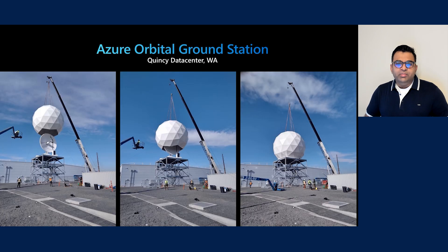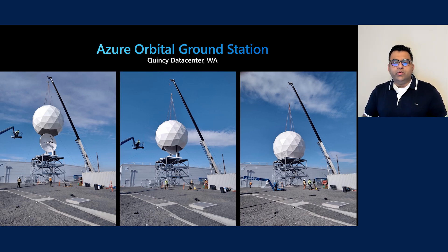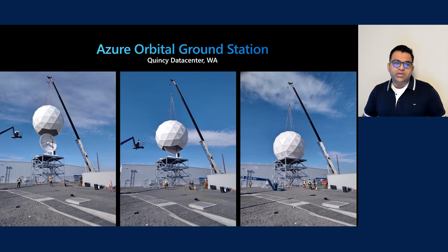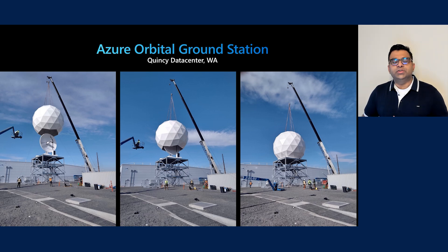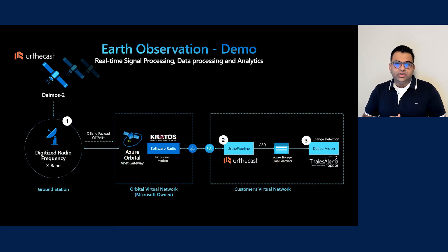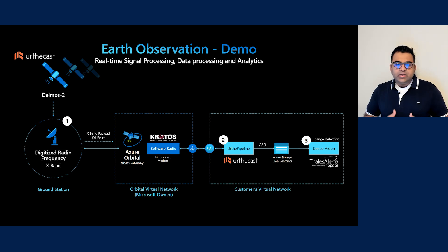We have been heads down building our own ground stations in our data centers. This is our first ground station at our Quincy data center in the state of Washington, housing two 6.1 meter antennas supporting X, S, and UHF bands. Over the course of this year, we plan to build many more ground stations and also make partner ground stations available to enable our customers to ingest data directly in Azure.